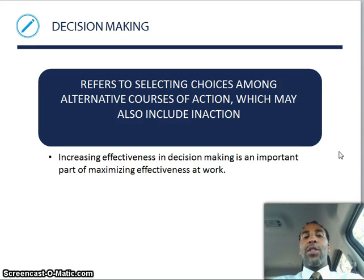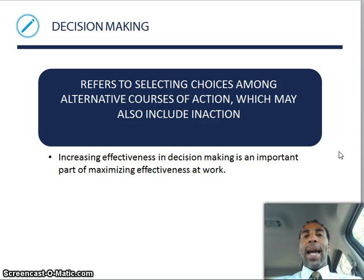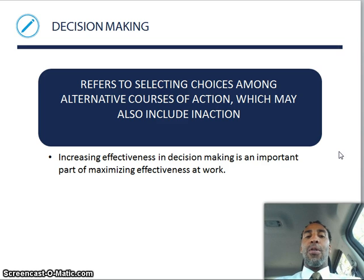Decision making refers to selecting choices among alternative courses of action, which may also include inaction — meaning you're not going to do anything. For instance, my inaction could have been not to buy the electric car, action would be to purchase the electric car, and another form of action would be to purchase a non-electric car. You have action and non-action — it's still a decision. Increasing effectiveness in decision making is an important part of maximizing effectiveness at work. If you have a decision making process, you are typically going to make pretty good decisions.